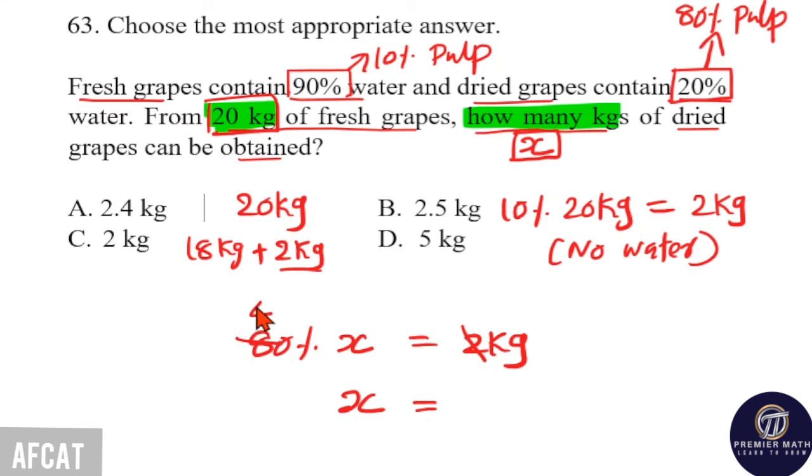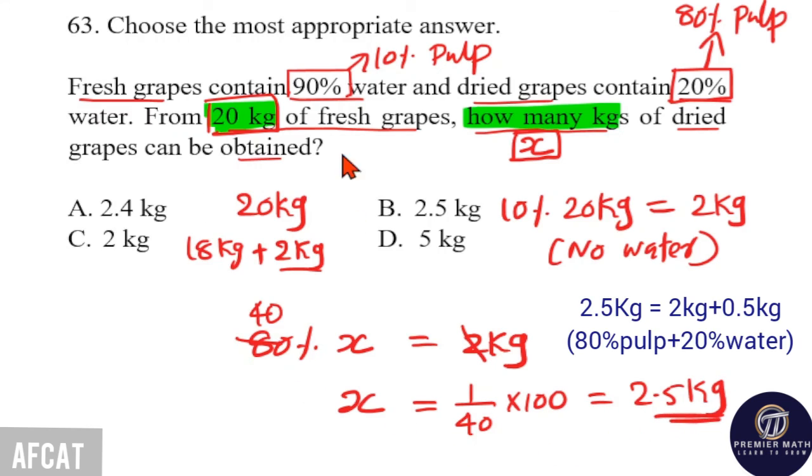Here, 2 goes 40 times in 80. Then, x is equal to 1 by 40 into 100. 100 by 40 is equal to 2.5 kg. That means, from 20 kg, we will get 2.5 kg dried grape.